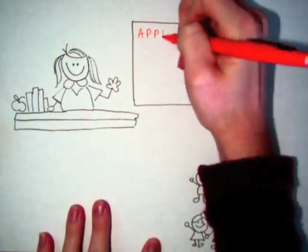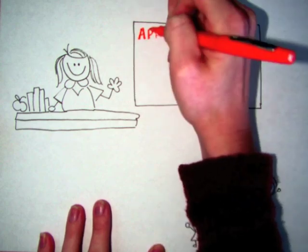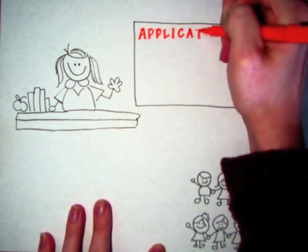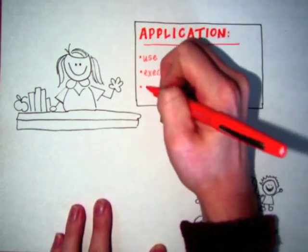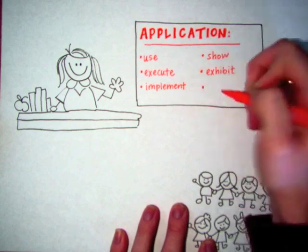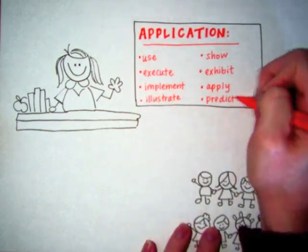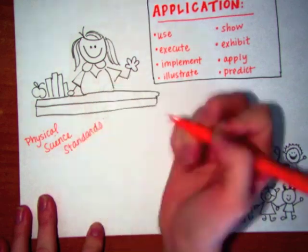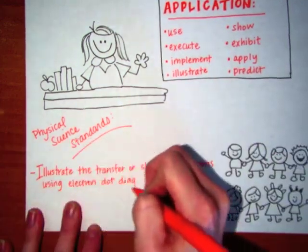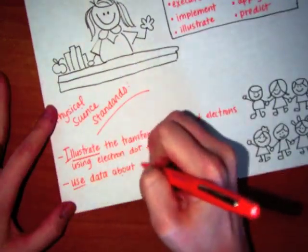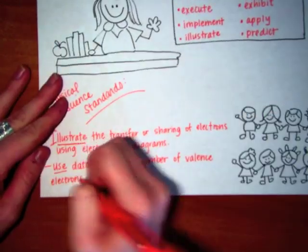In the application stage, students are asked to actually use their acquired knowledge to solve problems in a different way, relying on their own instincts to make decisions. When students are tested on their ability to apply knowledge, they will be asked questions that begin with words like use, execute, implement, show, or exhibit. In this stage, teachers are trying to determine if their students can carry out a procedure by using their previously acquired knowledge about a subject.